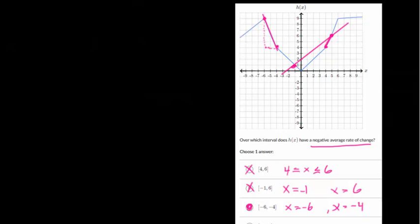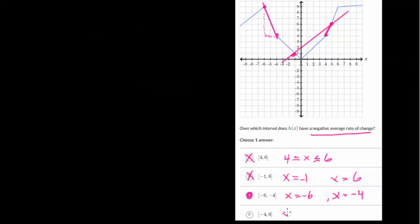But let's check the last one just to be certain. So this is when x is -4 and x is 6. So we go from -4 to 6. But when we draw in that graph it looks something like that. But that's a positive sloping line, since as x increases the y value increases as well. So choice C is definitely the right answer here.